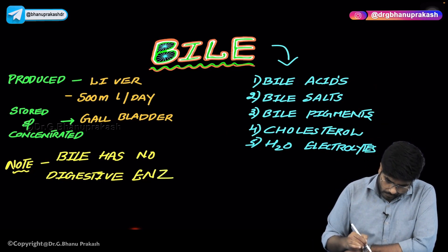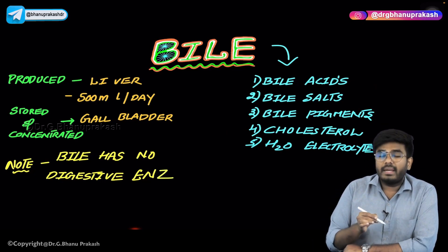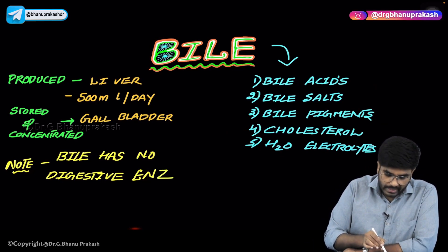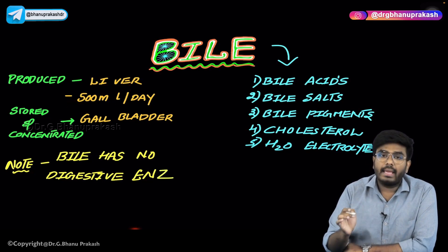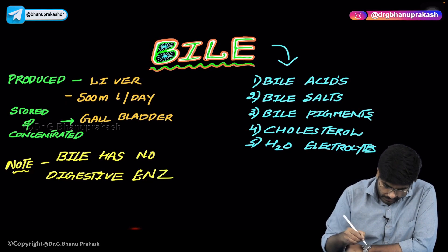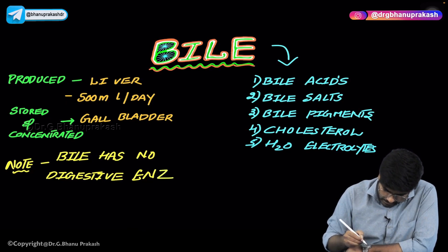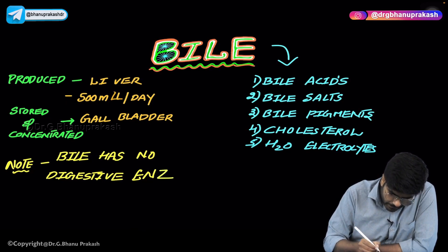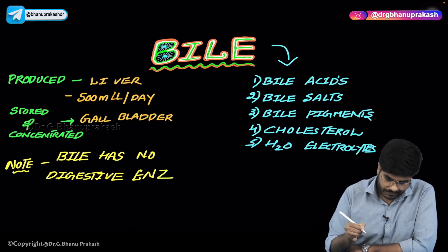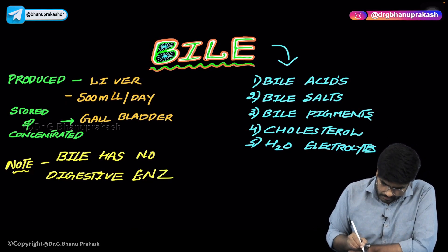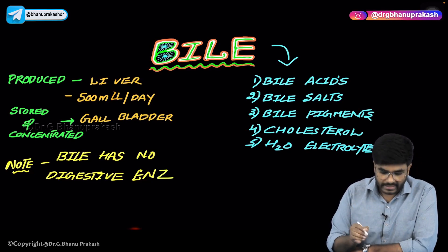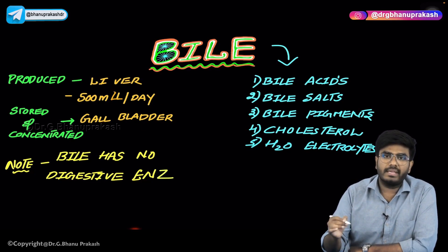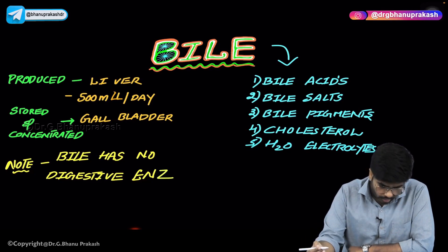Bile is produced in the liver. How much bile is produced every day? 500 ml — 500 ml per day, not liters. Where is bile stored? Bile is stored inside the gallbladder.